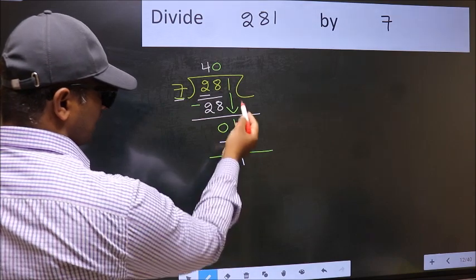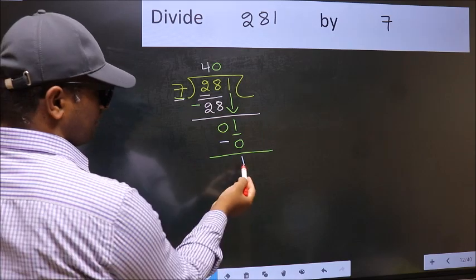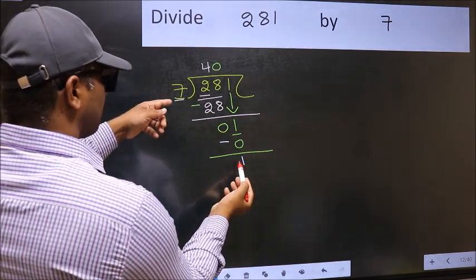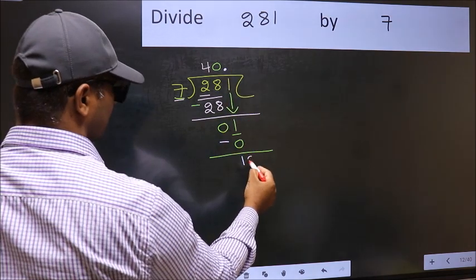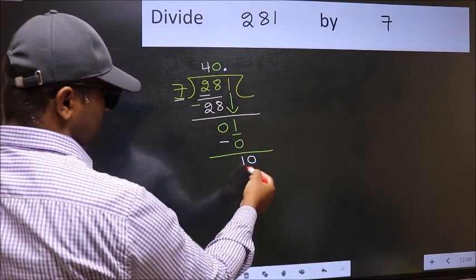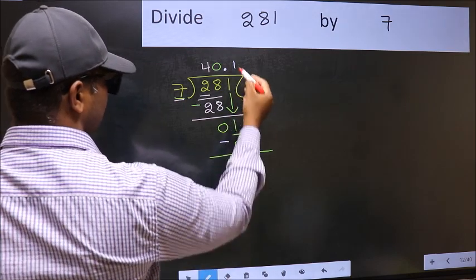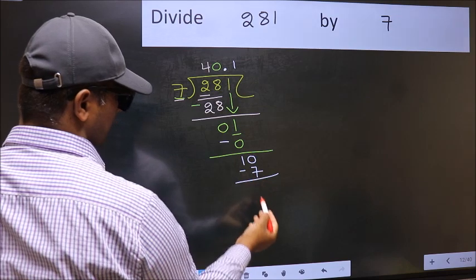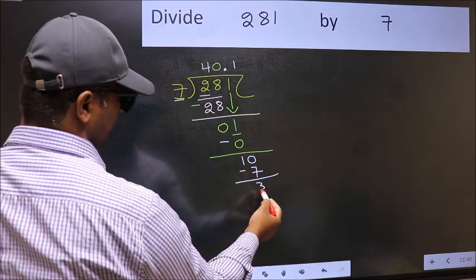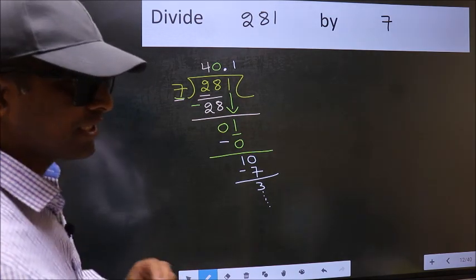Over here, we did not bring any number down. And 1 is smaller than 7. So now you should take 0. So 10. A number close to 10 in 7 table is 7 once 7. Now you should subtract. 10 minus 7, 3. And continue the division.